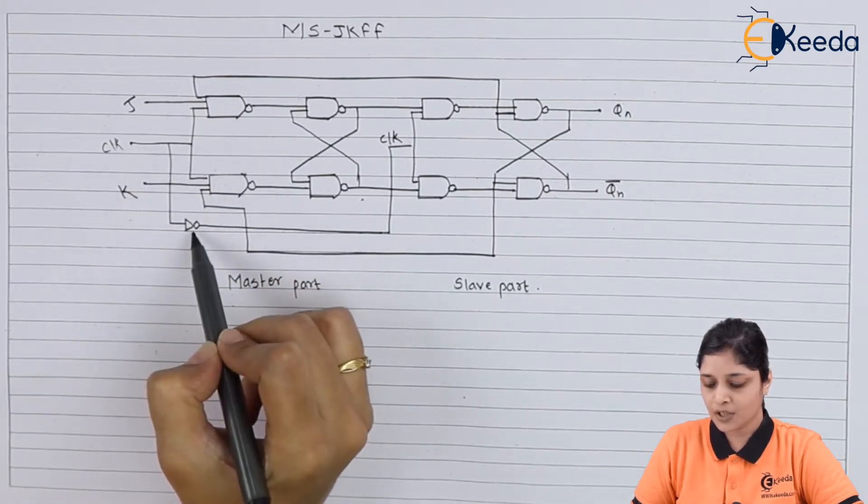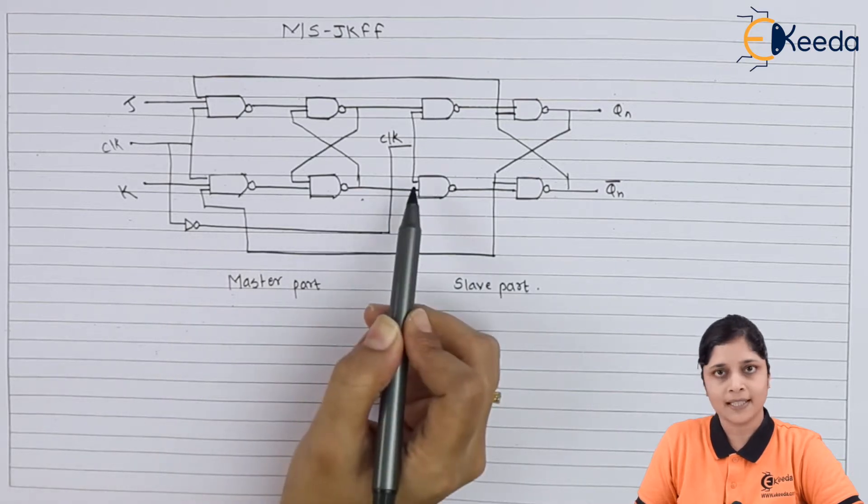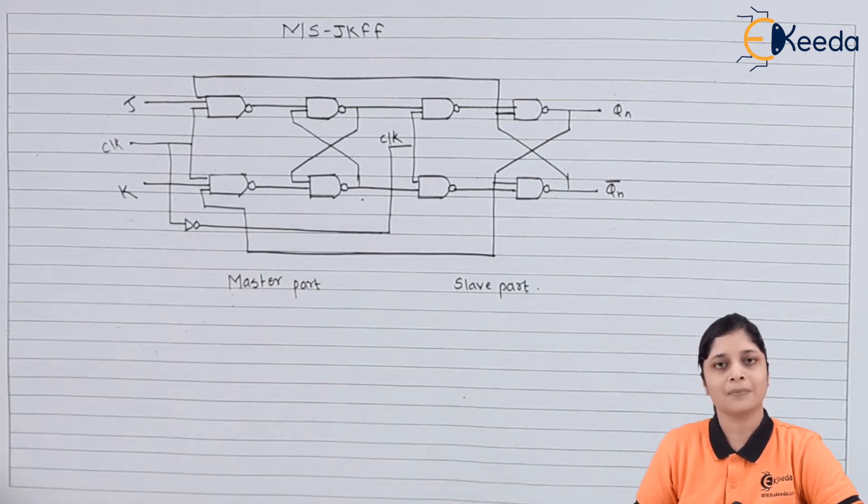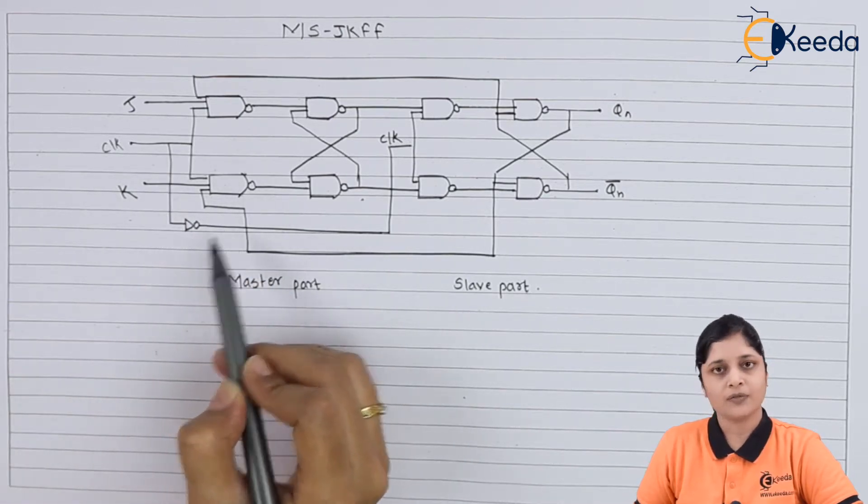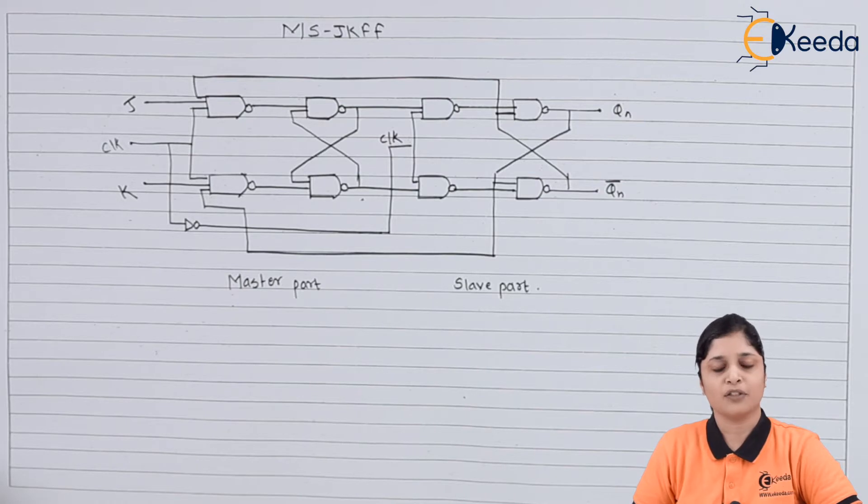We have used the NOT gate to operate slave and master. Whenever the clock is 1, master will operate, and according to the NOT gate, whenever the clock is 0, slave will operate.